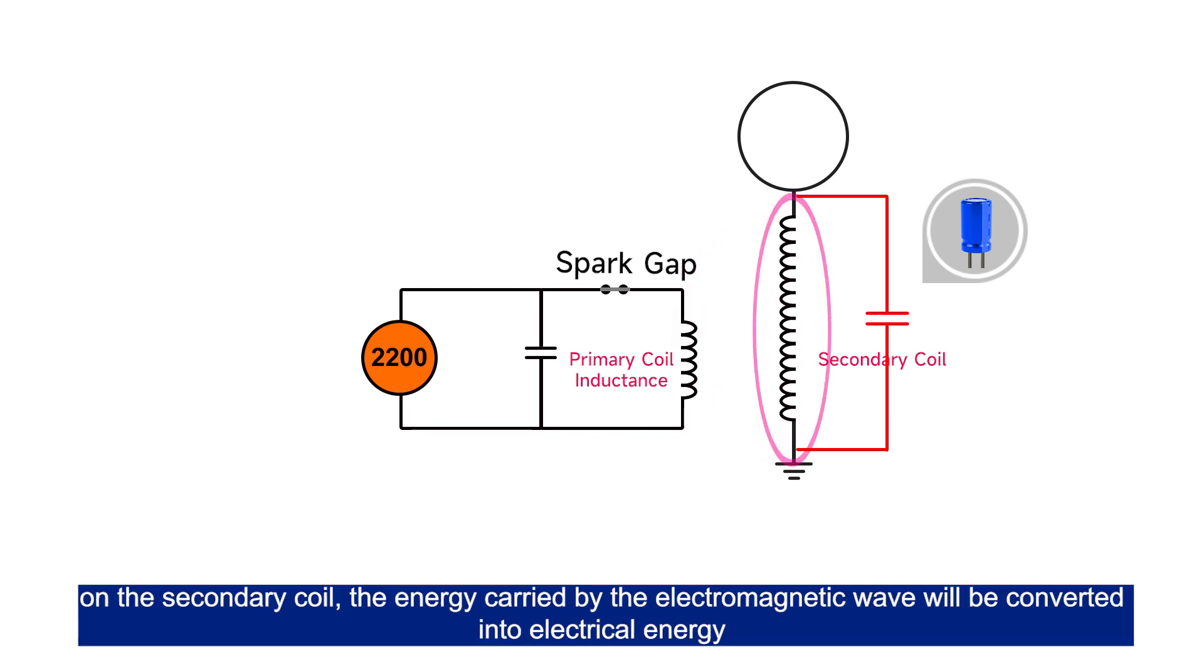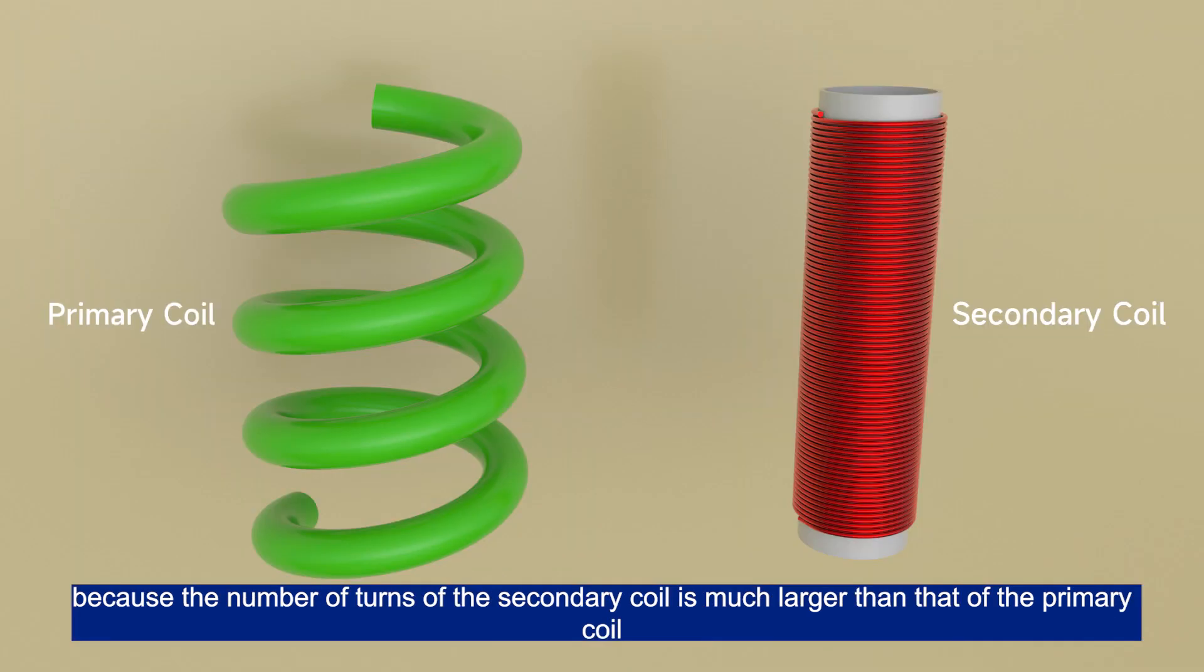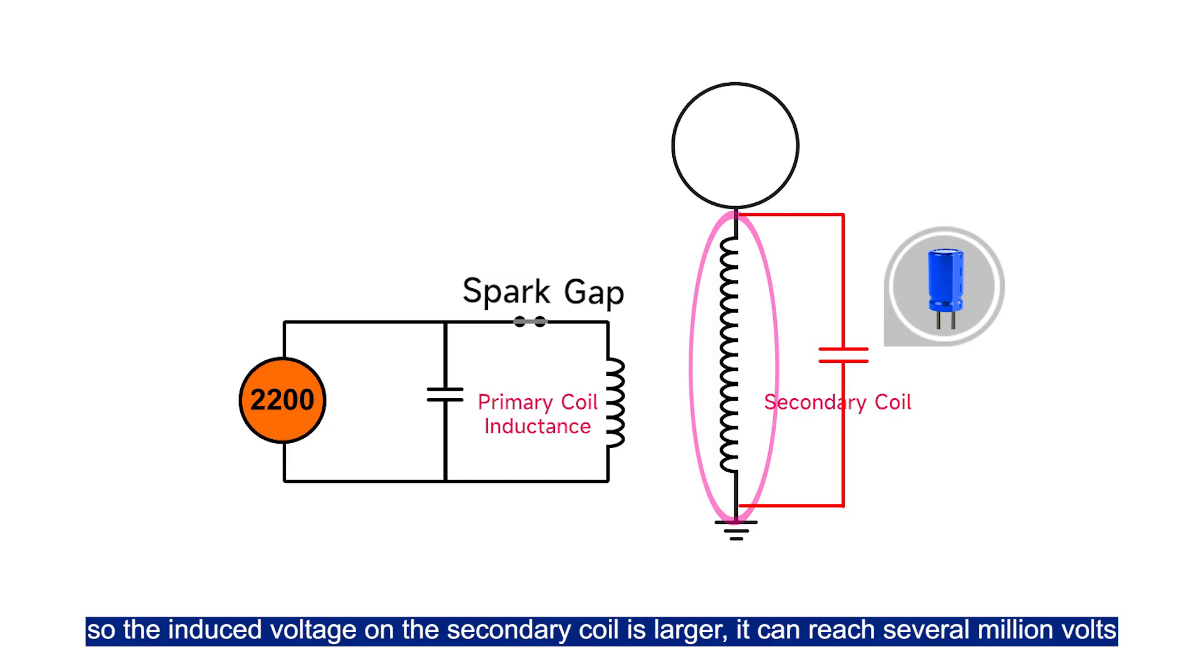On the secondary coil, the energy carried by the electromagnetic wave will be converted into electrical energy. Because the number of turns of the secondary coil is much larger than that of the primary coil, so the induced voltage of the secondary coil is larger, it can reach several million volts.